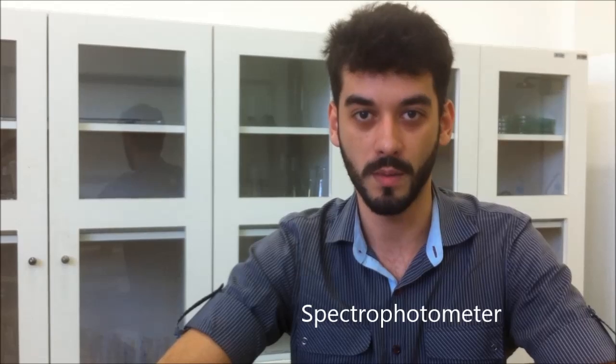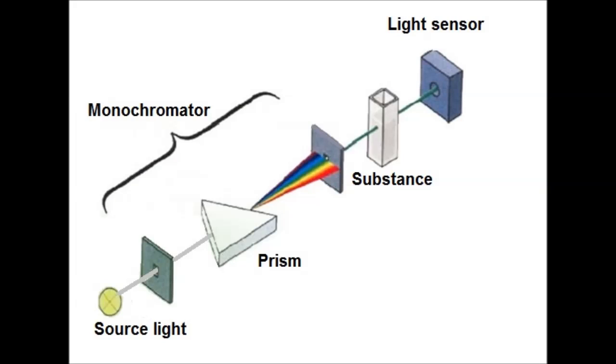Fortunately, all these problems can be solved by a device called spectrophotometer. A spectrophotometer is a device that analyzes the concentration of a chemical solution by absorption of light in a specific wavelength.